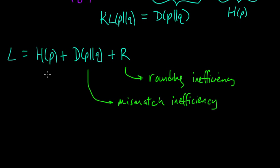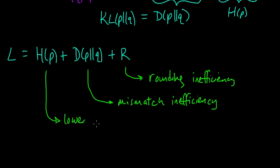We now have: expected length L equals the relative entropy of P with respect to Q, plus the entropy H(P), plus the rounding inefficiency R. This lets us characterize very precisely how much using the wrong probability distribution affects things. We can decompose our expected length into three parts: the mismatch inefficiency (the increase in expected code length from using the wrong distribution), the entropy H(P) as the lower bound, and the rounding inefficiency.